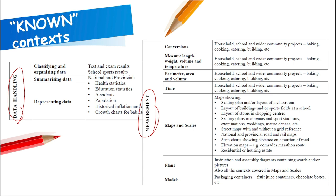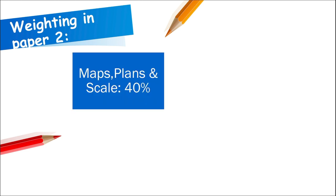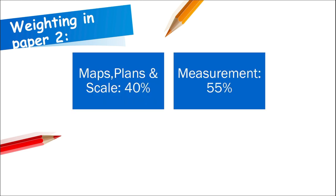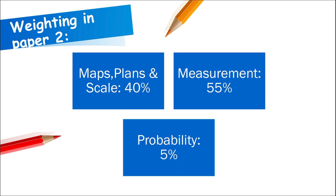Remember, questions one, two, and three will normally be known contexts, and then question four and/or five will have some unknown contexts. For paper two, the topic weighting is: maps, plans, and scale at 40% of the paper; measurement at 55%; and probability will be incorporated into these two topics.